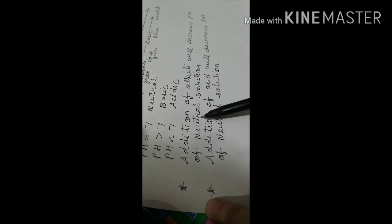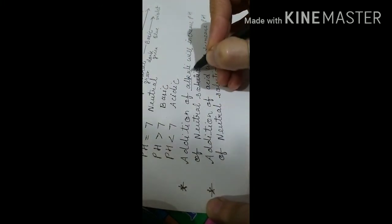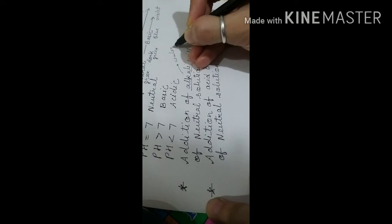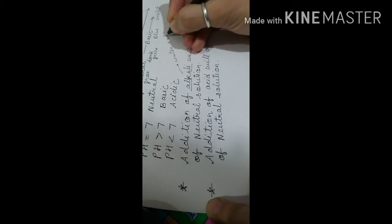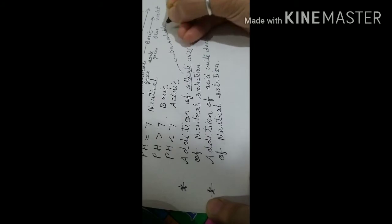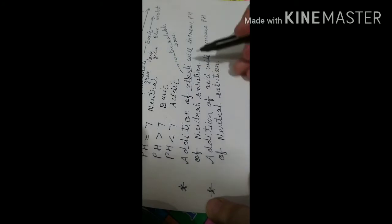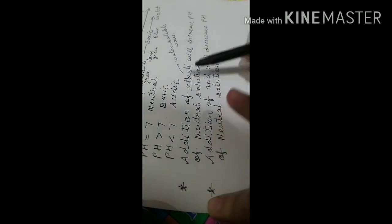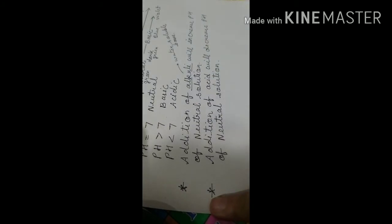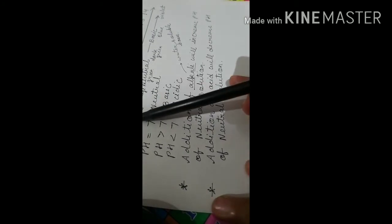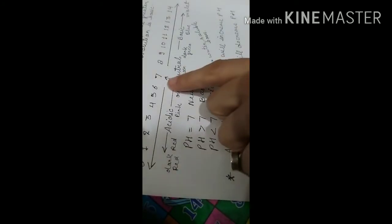There are two more important points. Addition of alkali — that is, water soluble bases — will increase the pH of a neutral solution. On the other hand, if we are adding acid to a neutral solution, the pH value starts to decrease.